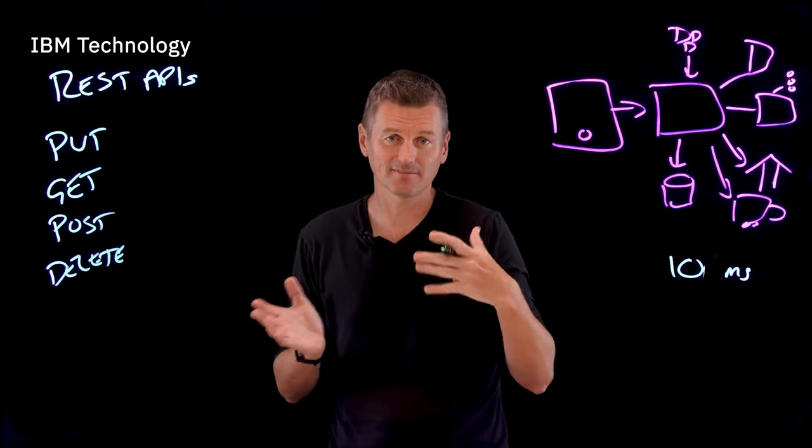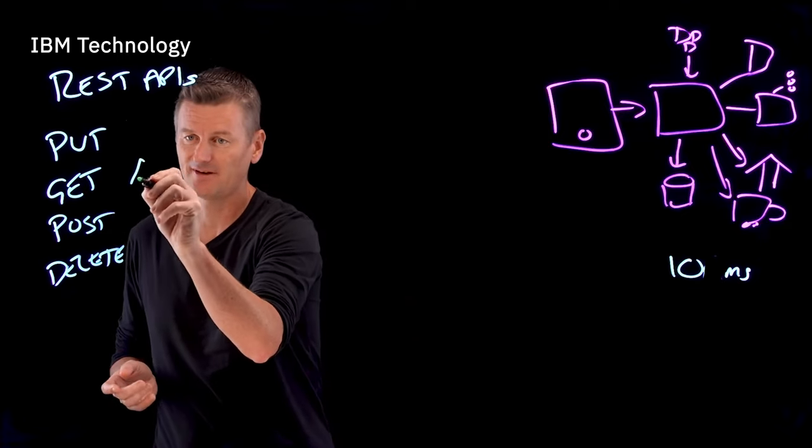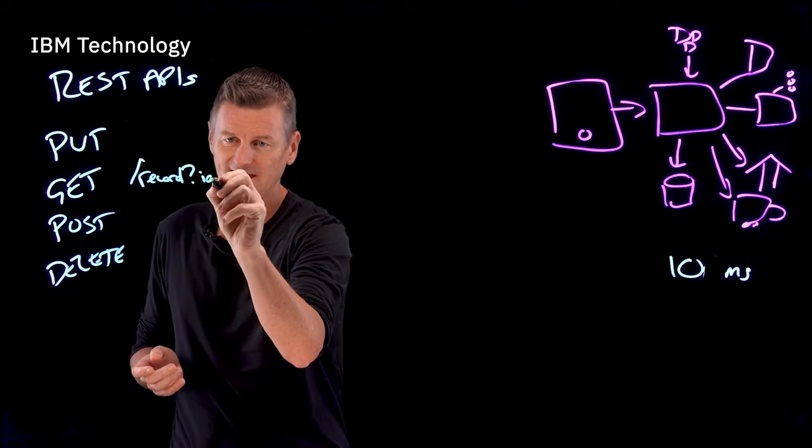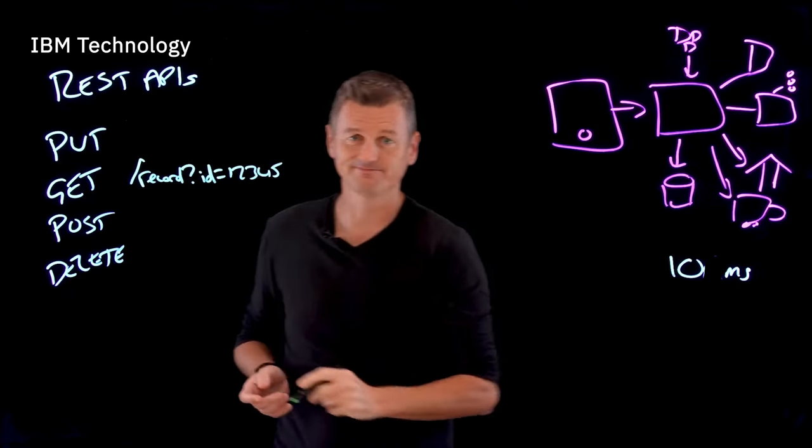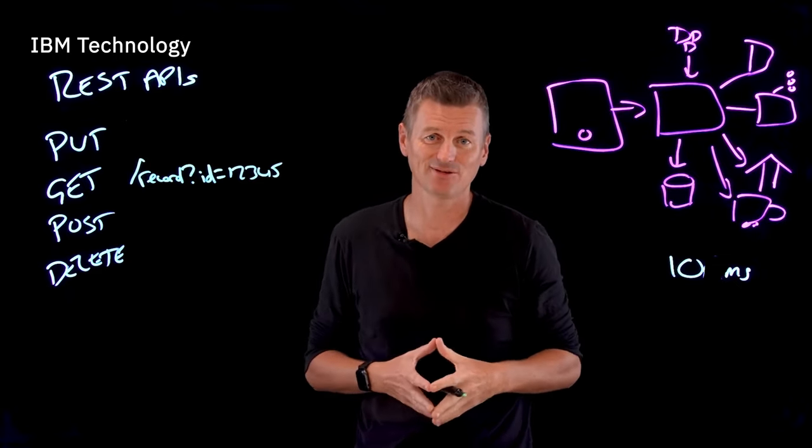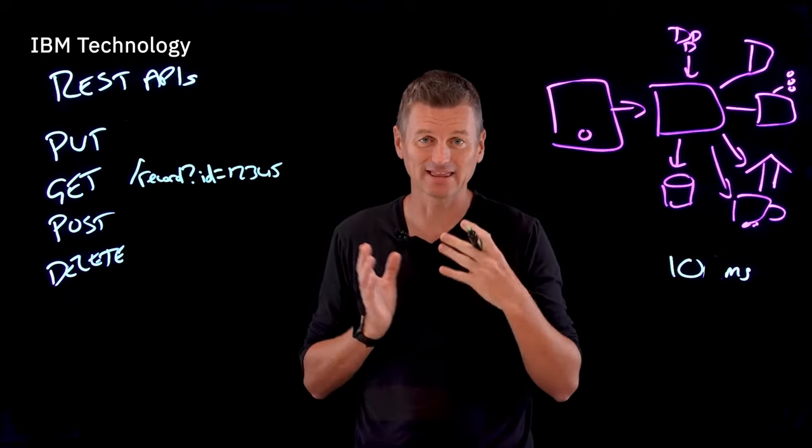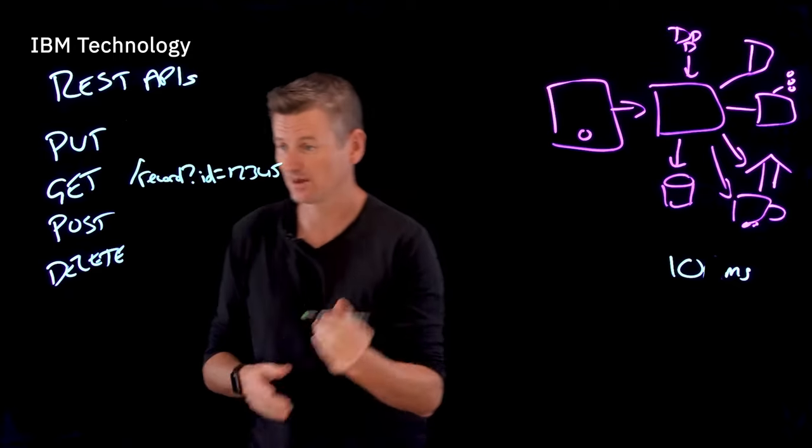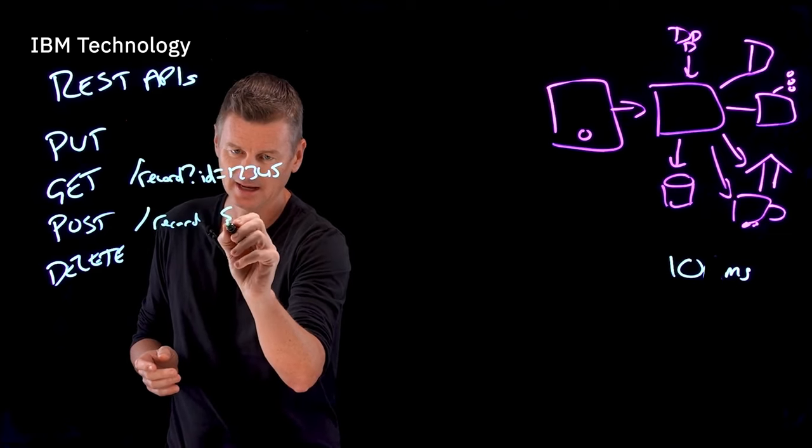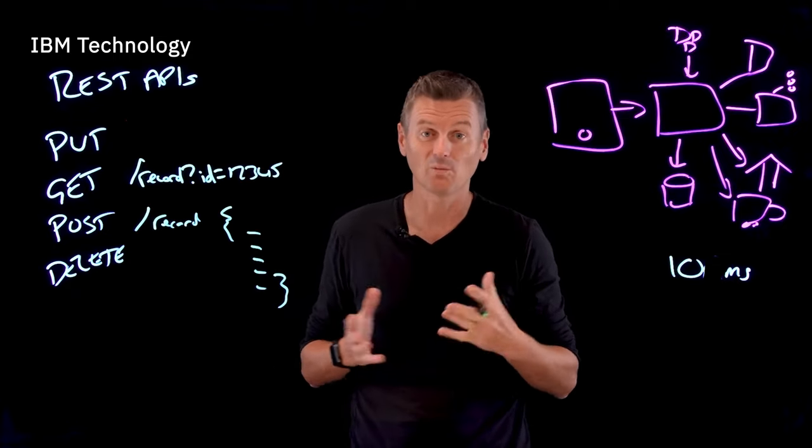And these are usually followed by some sort of record indicator. So for GET, we might say get, and then we would specify record, and we would provide the ID. Let's say 12345. And in the case of PUTs and POSTs, which are typically used to create and update records, these are also usually containing the actual data of the record as well. So with our POST, we might actually specify a record. And then in curly brackets here, we're going to specify what's to go in that record, what we want recorded.